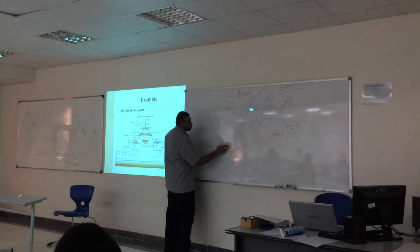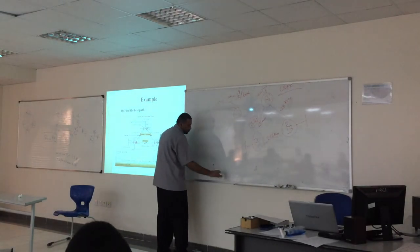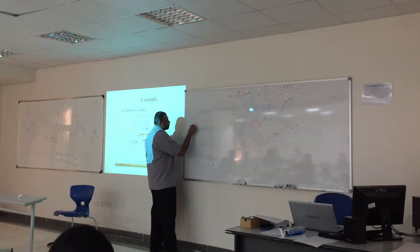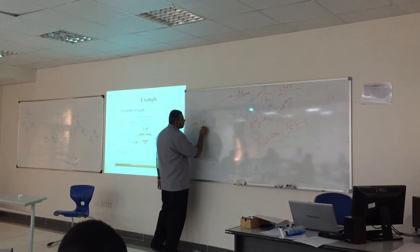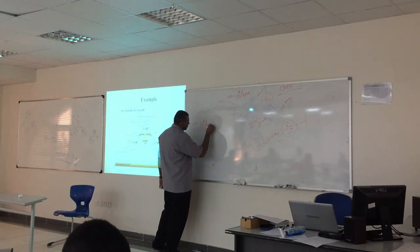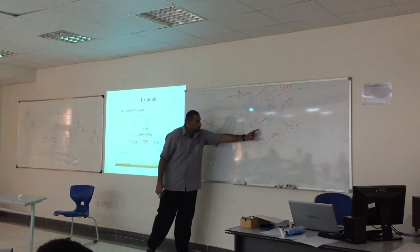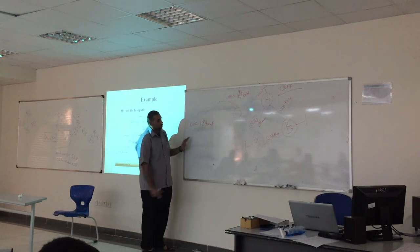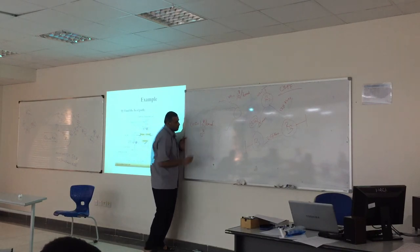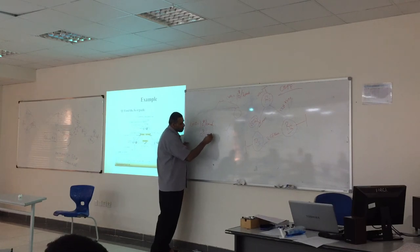Cost equals 10 to the 8 divided by 100. The one with 64 kilobits per second, that means 10 to the 8 divided by 64,000.